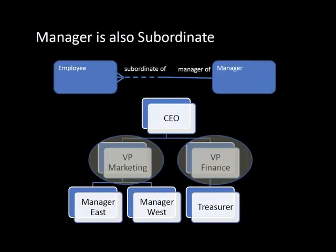The line bends back on itself — from the entity to itself — with role names on either side. The whole line is dashed because the CEO has no manager and employees at the bottom have no subordinates, so both ends allow non-participation. We'll come across several more examples of unary relationships.